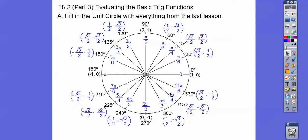Everything is positive in the first quadrant. Remember: all students take calculus — all trig functions are positive, only sine is positive, only tangent is positive, and only cosine is positive in their respective quadrants. We always write our ordered pairs as cosine comma sine.